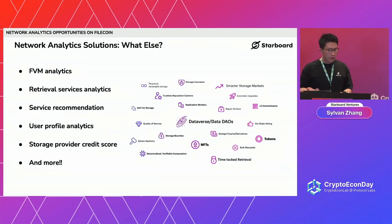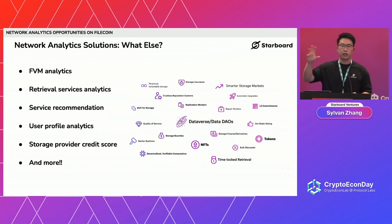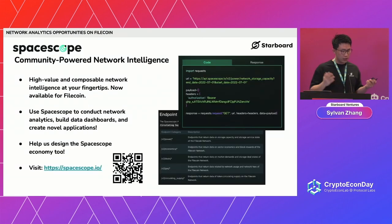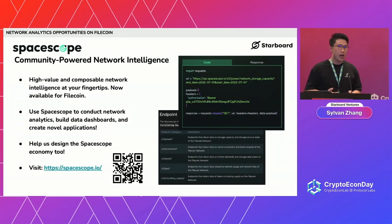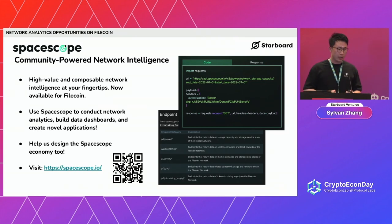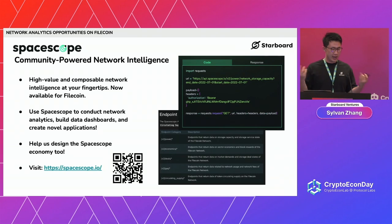There are more opportunities coming. With the upcoming FVM, there will be FVM analytics. The retrieval market is coming up soon. You could have service recommendations if Filecoin becomes the e-commerce for decentralized cloud services, as well as user profile analytics, storage provider credit scores, and much more. That's why we also built SpaceScope — a composable network intelligence API that you can use to easily access network data and produce your own network intelligence, or use it as a data source to power your applications. If you're interested, reach out and get onboarded with SpaceScope. We also want SpaceScope to become a community thing — help us design an economy around SpaceScope and around data analytics in general.